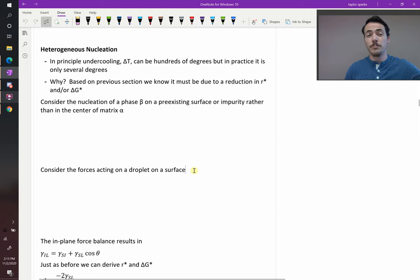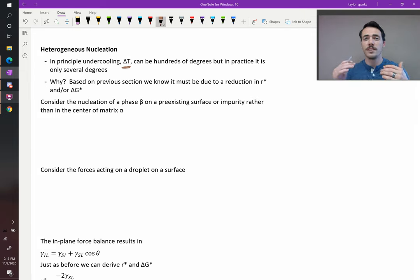We've just learned that in principle, delta T, this amount of supercooling for some things like going from a liquid to a solid, can be hundreds of degrees. You can see things happening hundreds of degrees further away from what you would expect from a thermodynamics perspective. But in practice, it's actually only a couple of degrees. It's only several degrees below. So what's the difference?